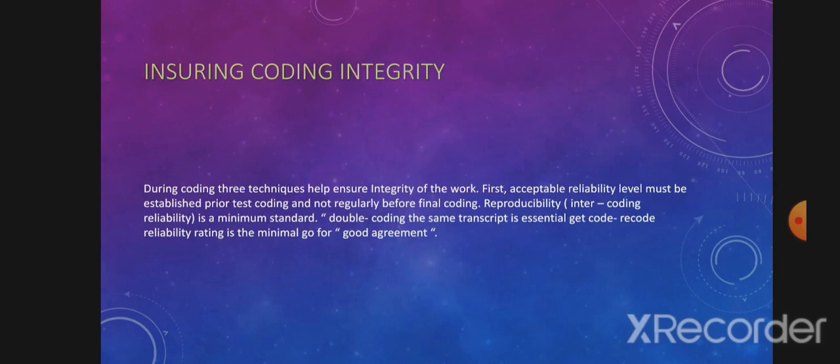Ensuring Coding Integrity. During coding, three techniques help ensure integrity of the work. First, an accessibility reliability level must be established prior to test coding and regularly before final coding. Reproducibility, or intercoder reliability, is a minimum standard; double coding of the same transcript is essential. A reliability rating is the minimal goal for good agreement.